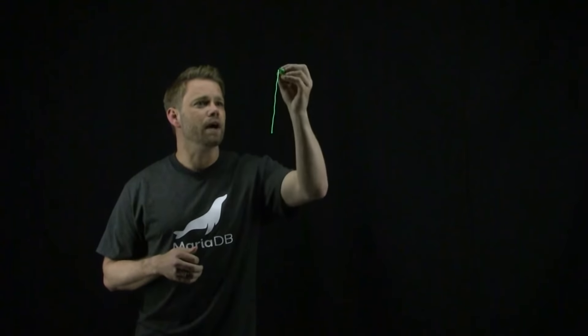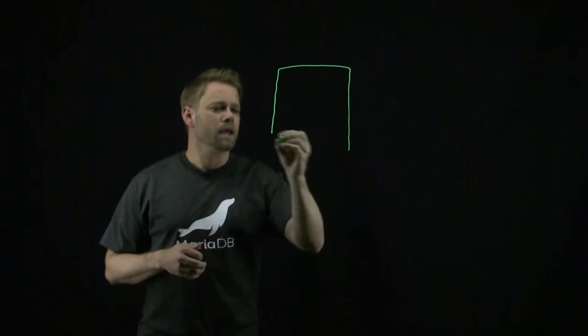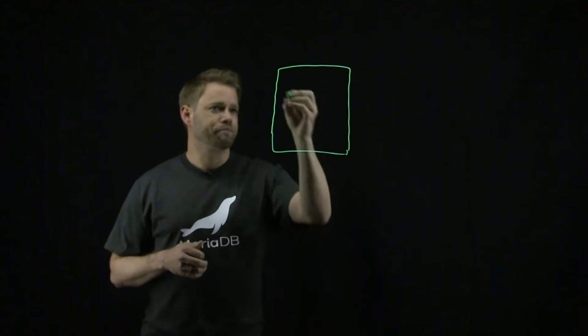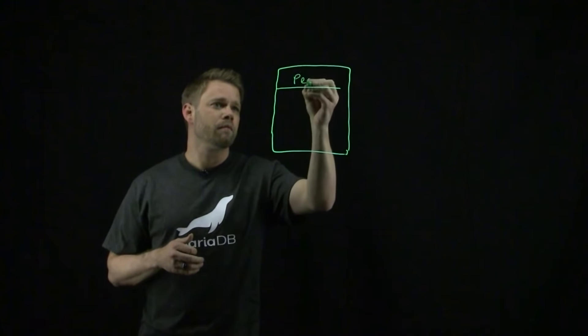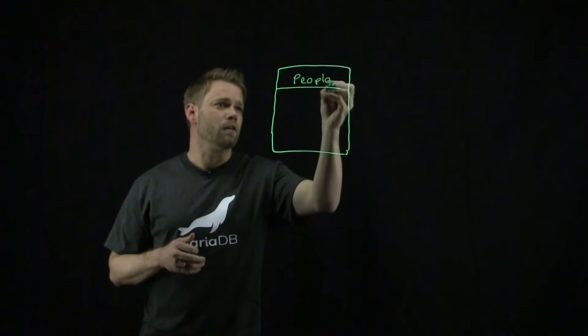I'm going to start by taking a look at an actual example. We're going to start by drawing a very simple table diagram. I'm going to call this table 'people', which we're going to track.